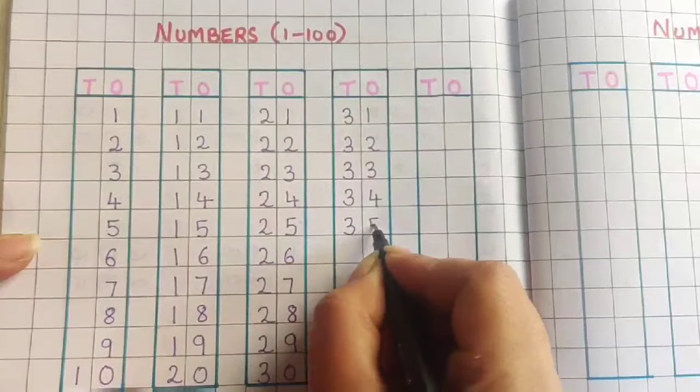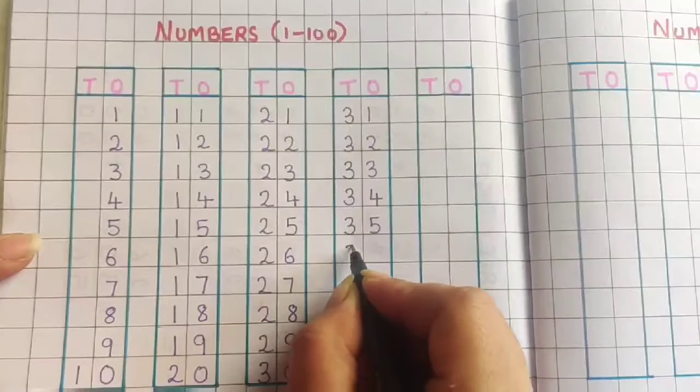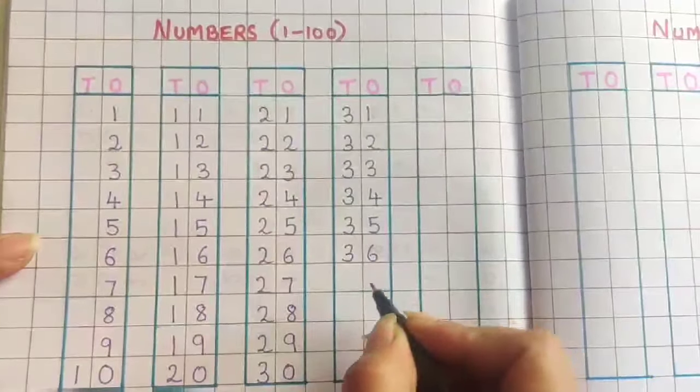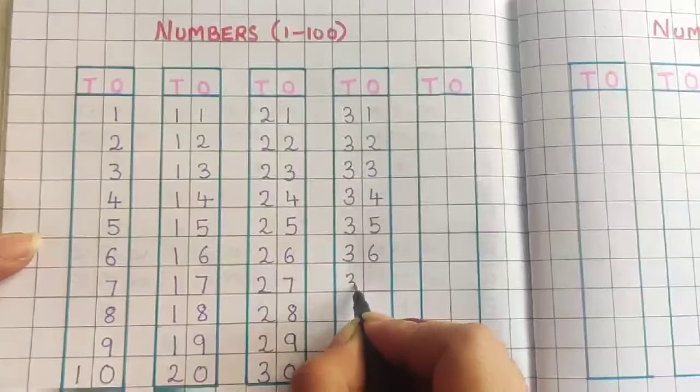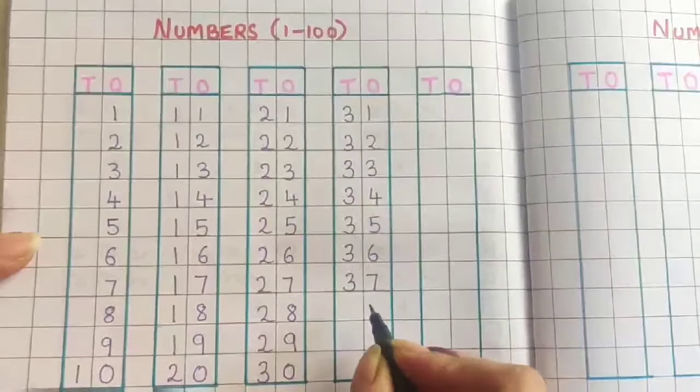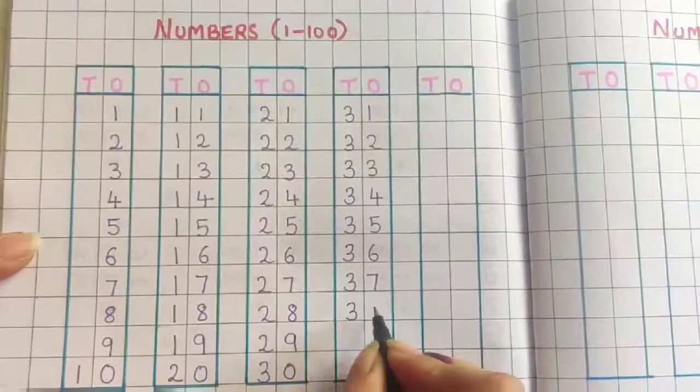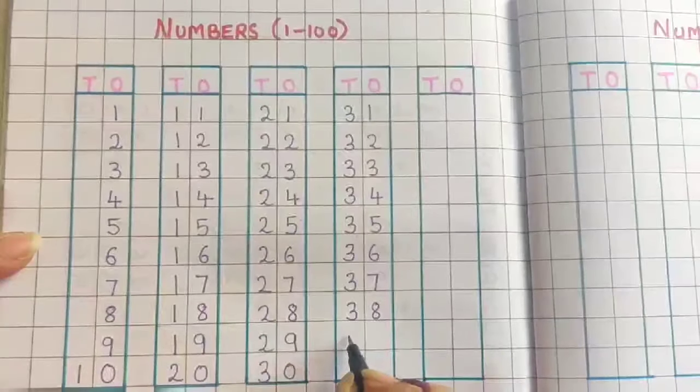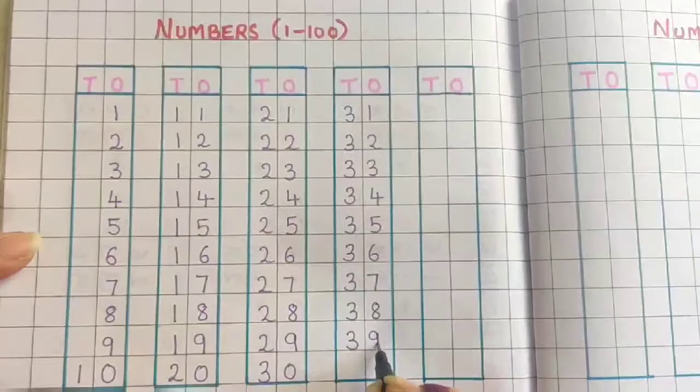3, 5, 35. 3, 6, 36. 3, 7, 37. 3, 8, 38. 3, 9, 39.